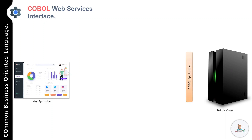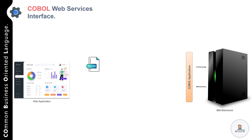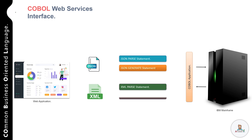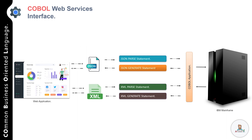If you look at the diagram, on one side you have a web application hosted on a non-mainframe platform, and on the other side you have a COBOL application hosted on IBM mainframe. When the web application is communicating with the COBOL application in JSON format, you can use the JSON Parse statement to consume the JSON message received from the web application, and the JSON Generate statement to convert COBOL data items into a JSON format that can be processed by the web application.